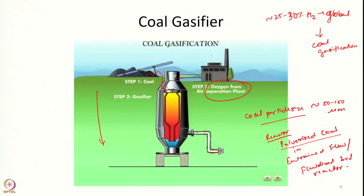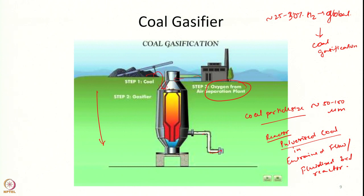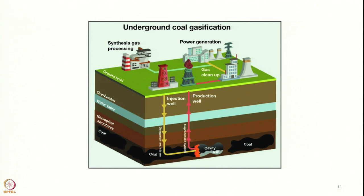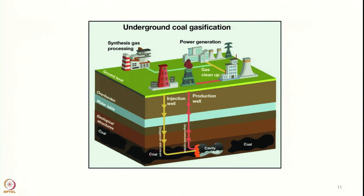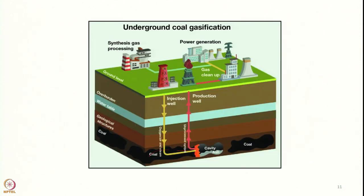One very interesting new area gaining prominence in India and elsewhere is underground coal gasification. This is not a new technology — the Russians mastered it almost 50 to 60 years ago. In the conventional approach, coal is mined, transported, pulverized, and then fed into a reactor — just saving the cost of reactor construction. In underground coal gasification, the mine cavity itself is used as the reactor.